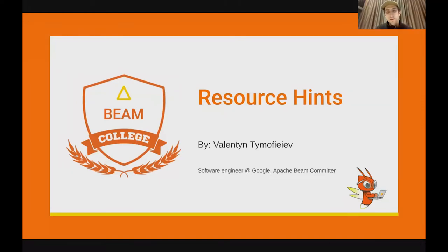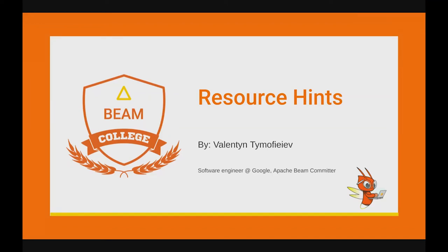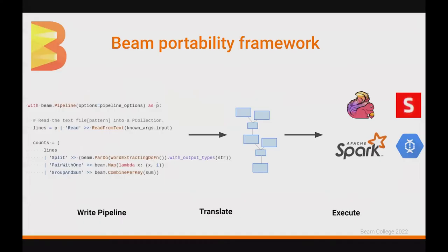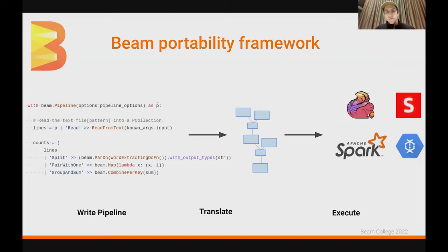My name is Valentin, I'm a software engineer at Google and I have been working on Apache Beam for some time. Today I'm going to talk about a recently added feature to Apache Beam called resource hints. Beam is a library that allows you to express data processing pipelines and run them on various runners. Typically, you author the pipeline and when you submit it to the runner for execution, Beam translates your pipeline into a directed acyclic graph of collections and transforms and eventually submits it to the runner.